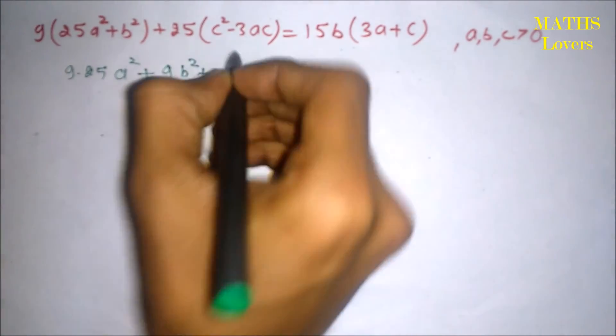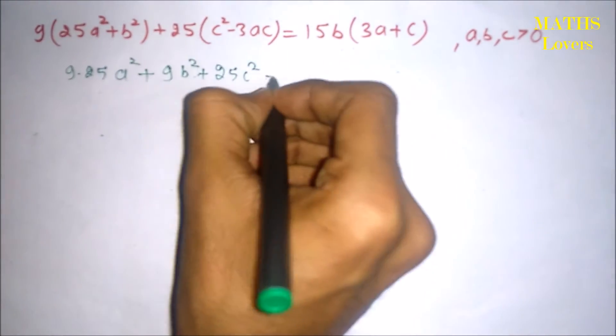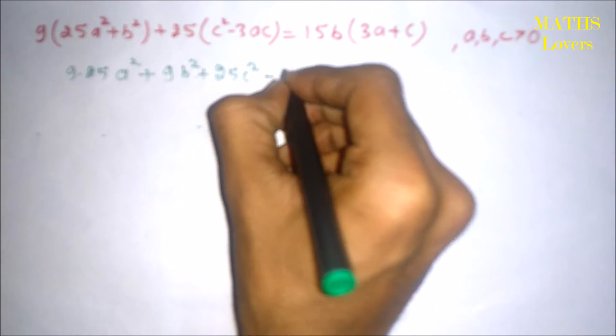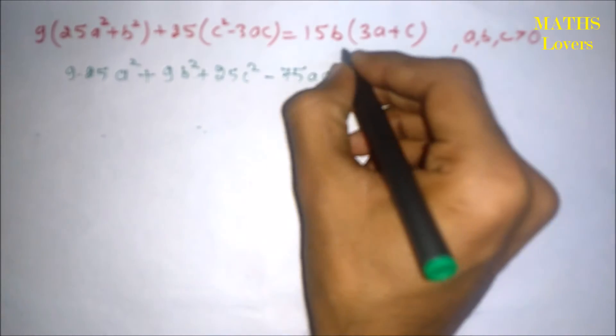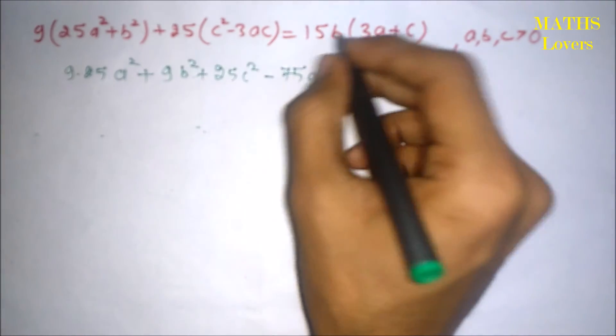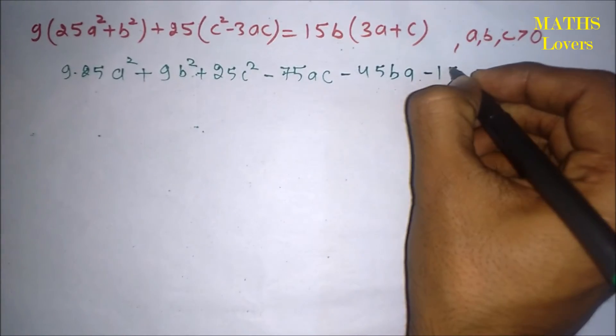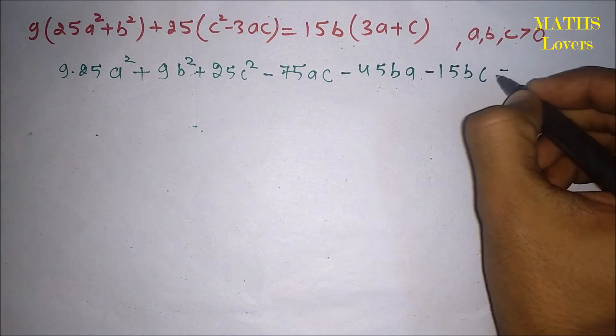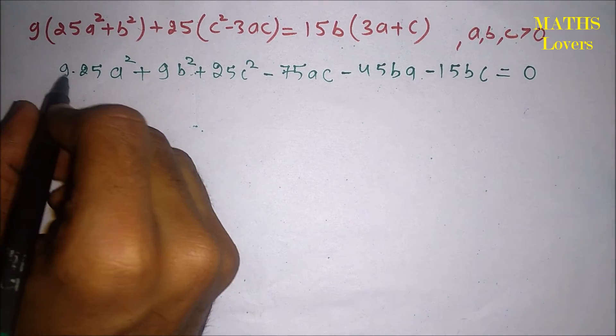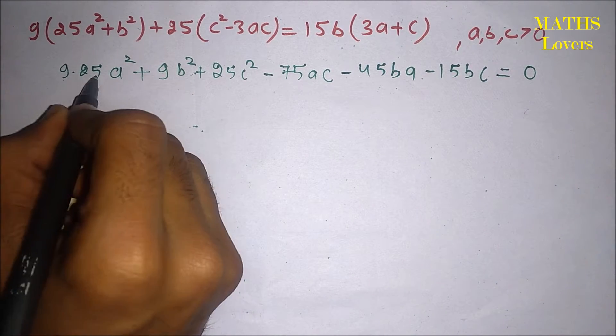plus 25c². Now 25 into 3, 75ac, minus take it this side, 45ba minus 15bc equal to 0. So what we can see here, we can see that this is 3 into 5